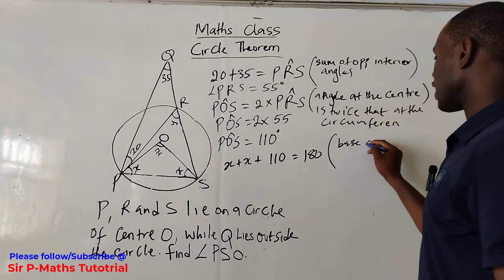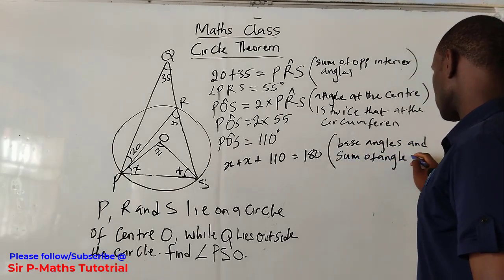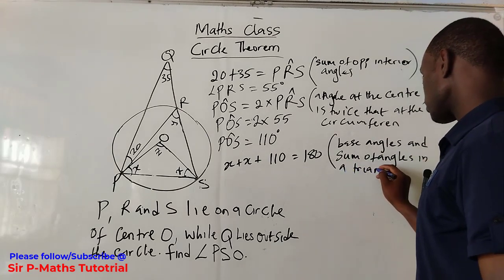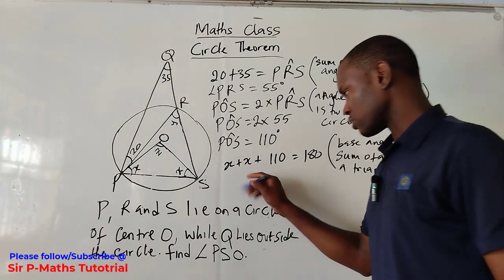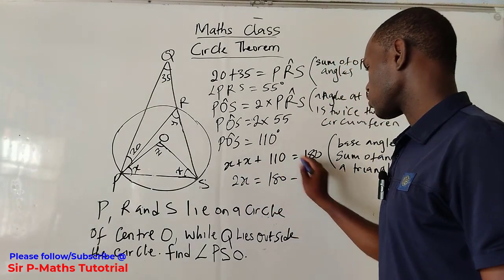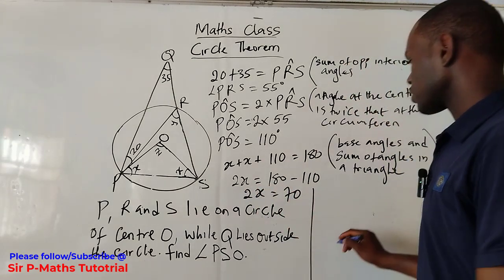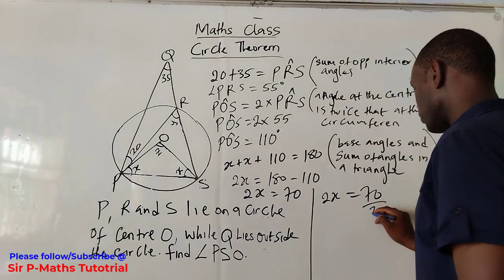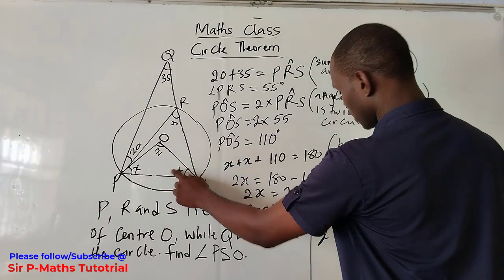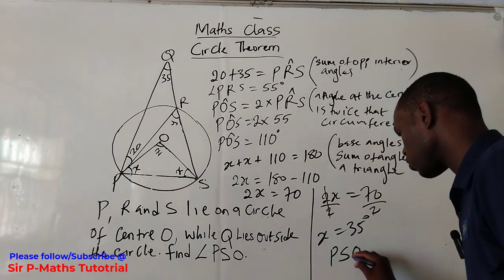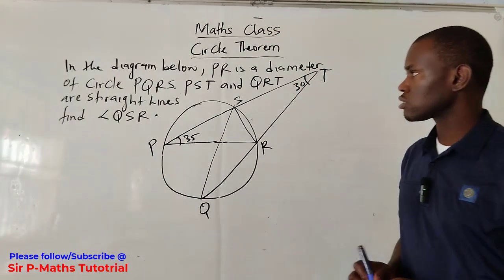The reason: base angles of an isosceles triangle are equal, and sum of angles in a triangle. So: 2x plus 110 equals 180, giving 2x equals 70, therefore x equals 35 degrees. The angle we are looking for, PSO, is equal to 35 degrees. Now let's solve the second problem.